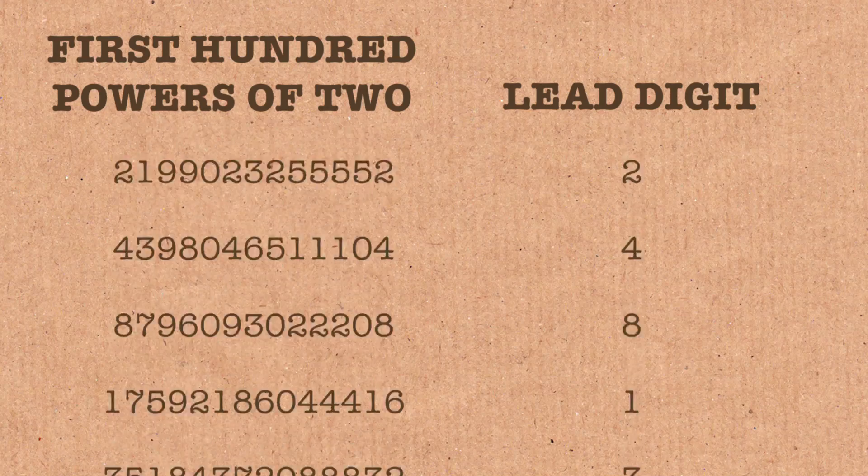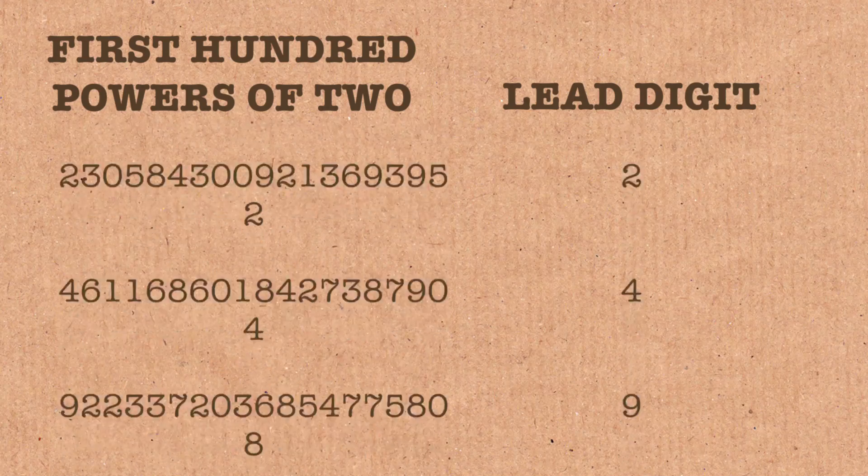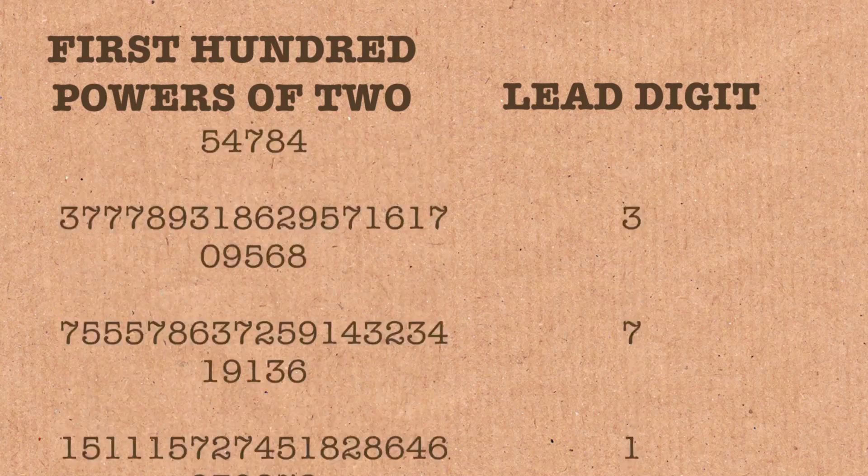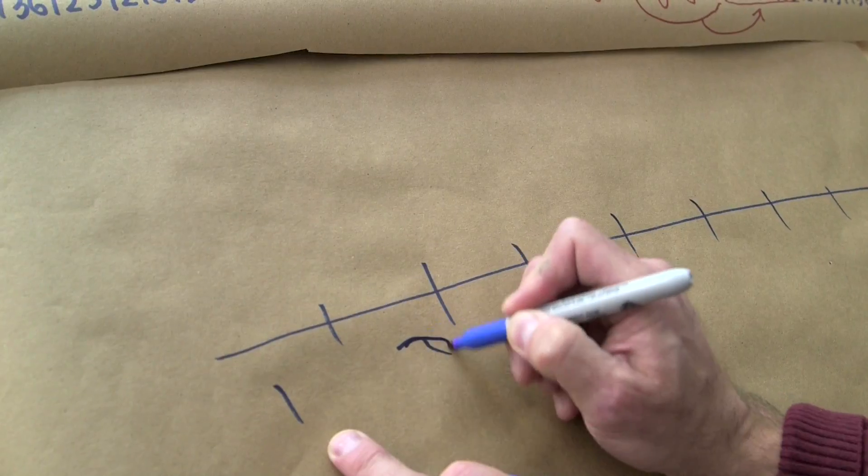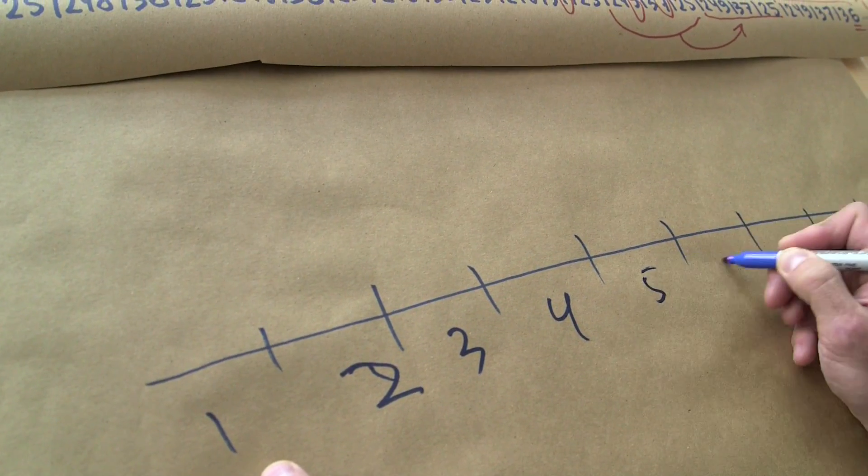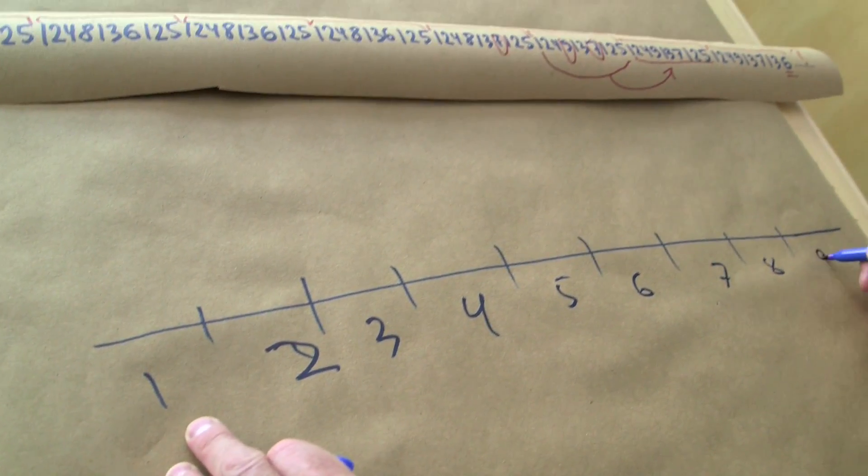So the question is what is going to happen in the long run. We have a huge, huge, huge number of these guys and maybe we can run a little experiment and count how many ones, how many twos, how many threes and so on. So let's have a little table. One, two, three, four, five, six, seven, eight, nine.